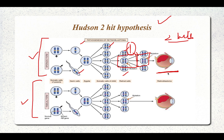In the familial form, germline mutations are already present. The person is born with a mutant RB gene, so only one additional hit is required for cancer development. Therefore, carcinomas in the familial form occur at a higher rate than in the sporadic form.